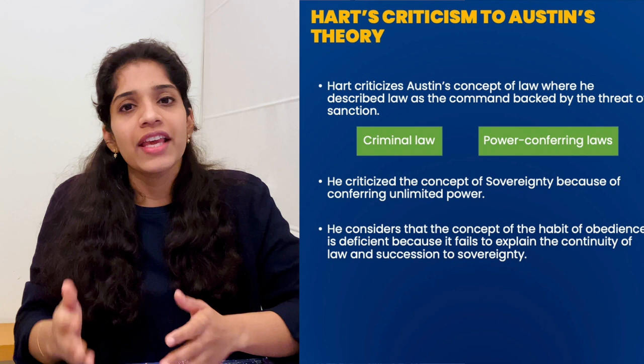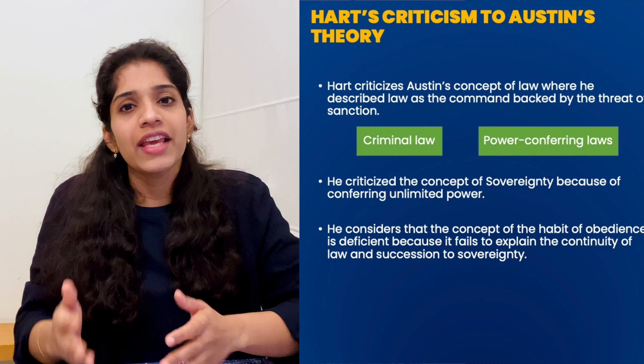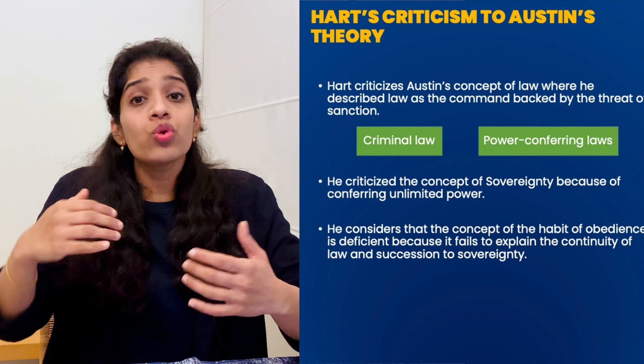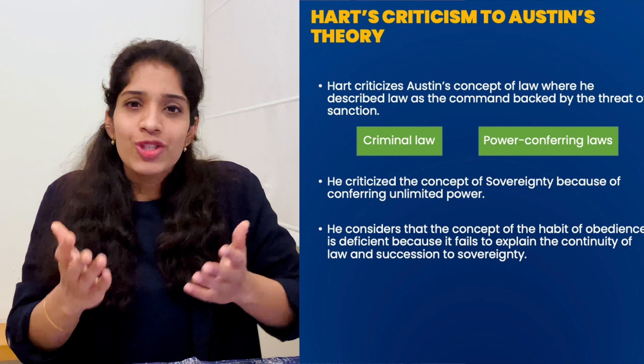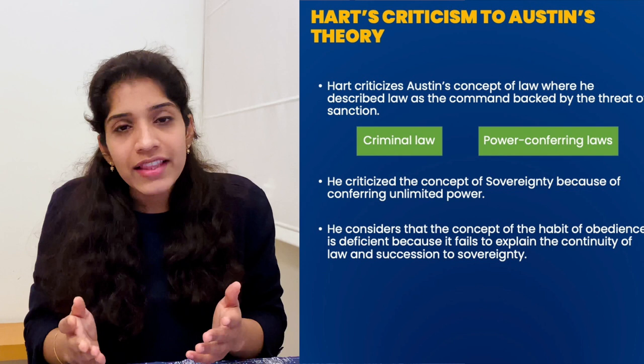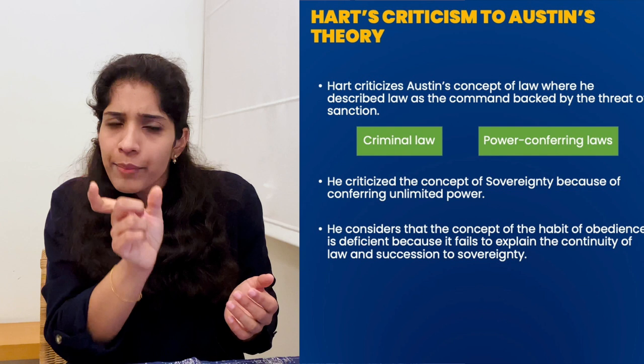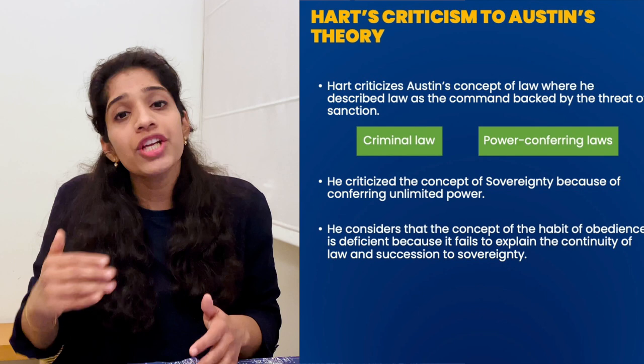Second criticism ये है कि HLA Hart कहते हैं, Austin की theory of sovereignty में sovereign को ultimate, unlimited, uncontrolled, absolute powers दी जाती हैं। Hart इसे criticize करते हैं क्योंकि sovereign के पास unlimited powers नहीं दी जा सकती — यह practical नहीं है। Third criticism: Austin ने sovereign को define करते time 'habit of obedience' का notion use किया, जिसके कारण Austin, continuity of law को explain नहीं कर पाते।